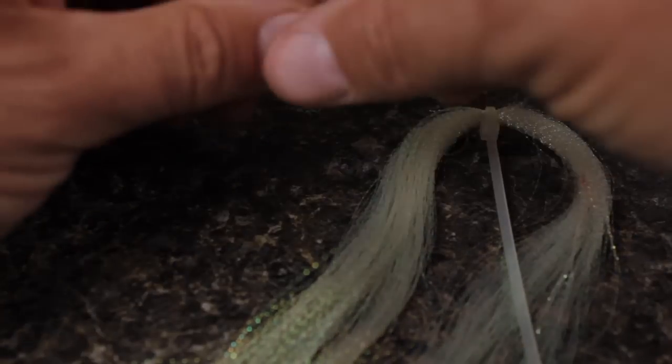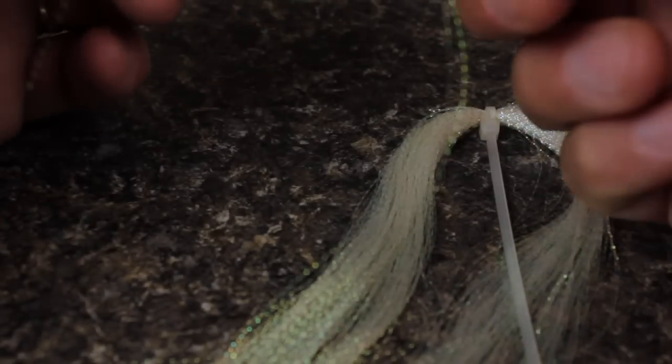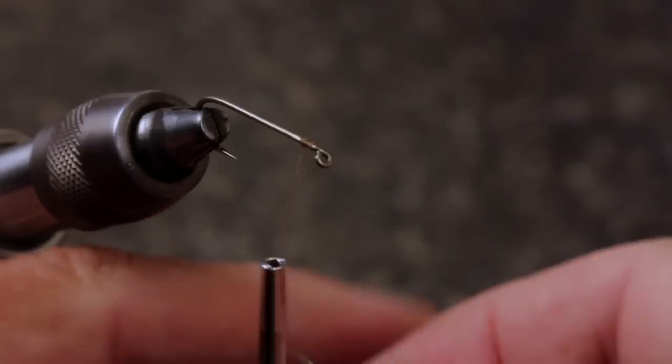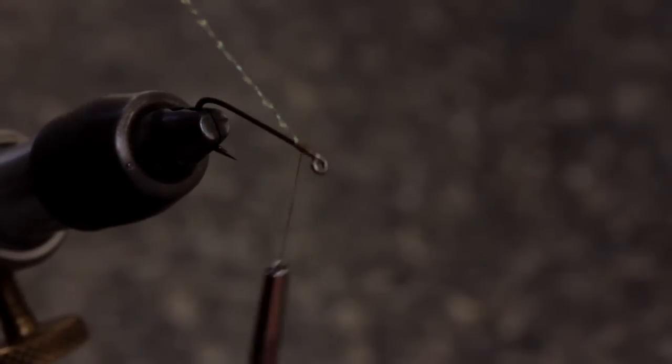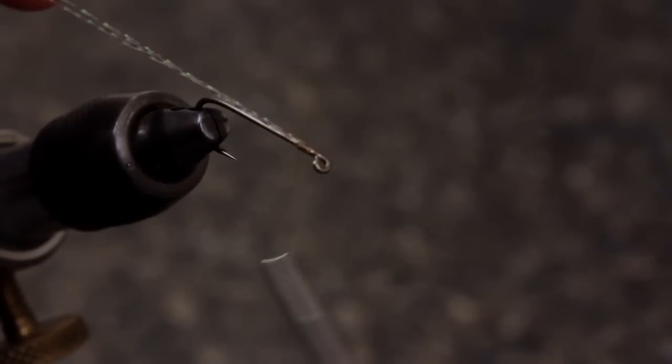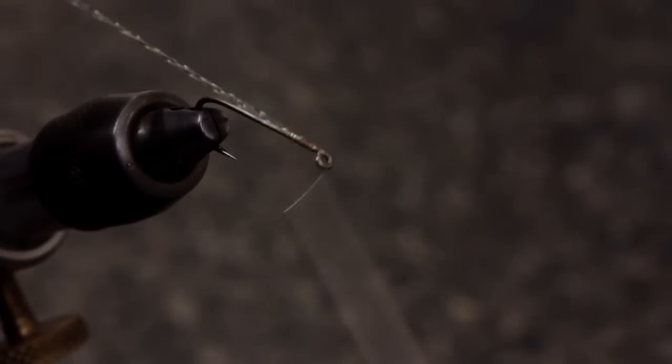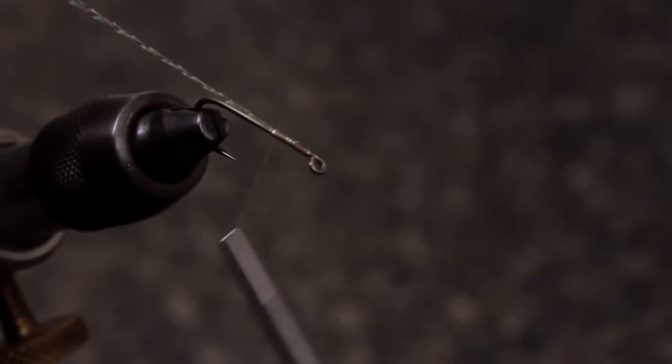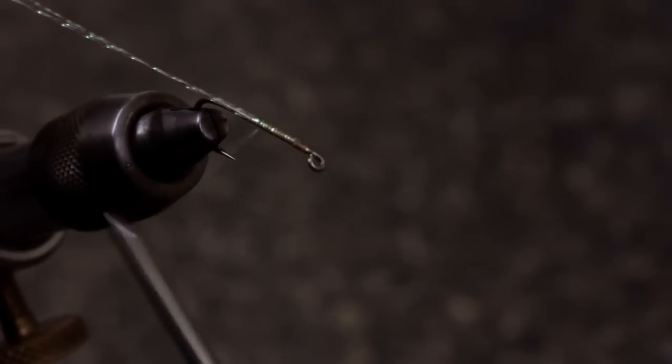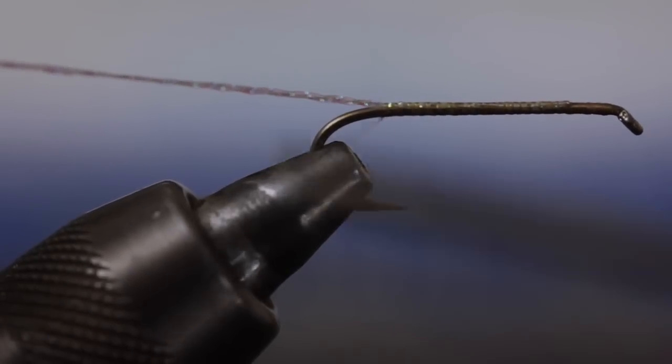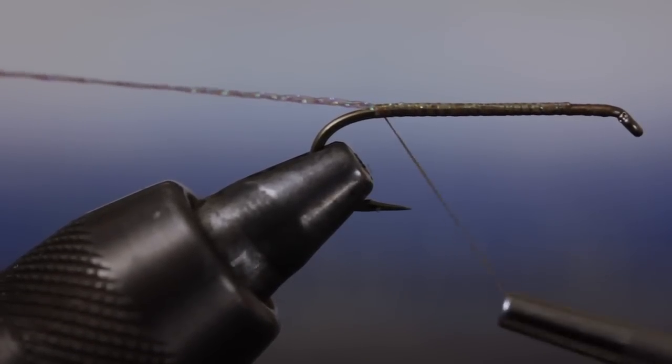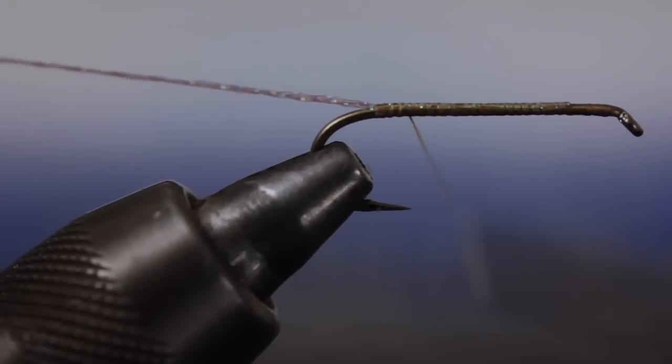Snip two strands free from a hank of pearl crystal flash. Fold the strands around your tying thread at their halfway point and then relocate the strands to the top of the hook shank. While holding the crystal flash up at a slight angle, take thread wraps rearward to secure it to the top of the shank. Continue taking wraps all the way back to about the barb, then advance your thread to above the hook point.